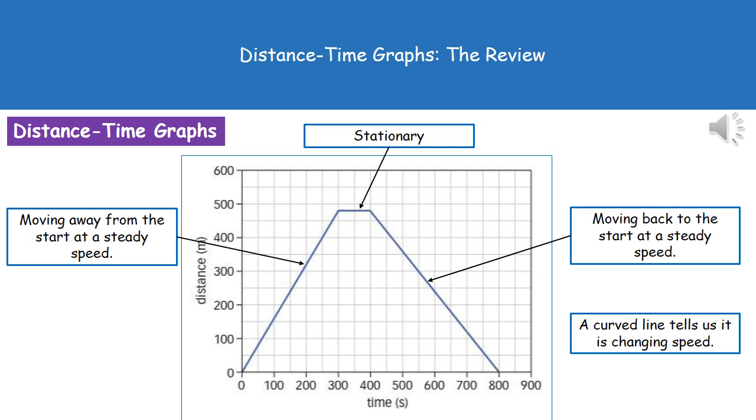If we had a curved line on our graph, that would tell us it was changing speed because that wouldn't be a nice uniform traveling of a set distance in a set time.